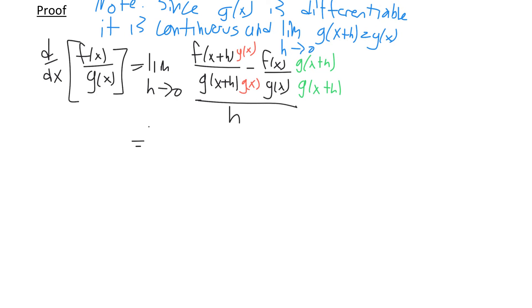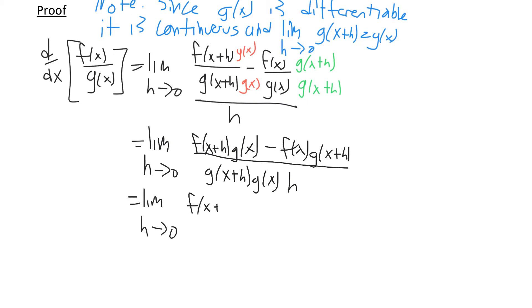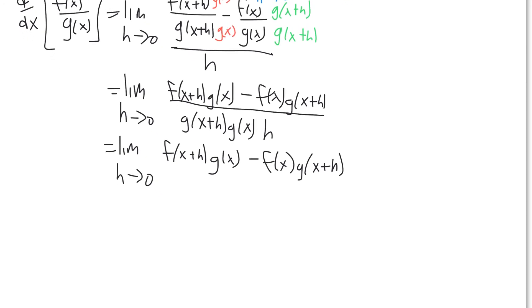That gives us the limit as h approaches 0 of f(x plus h) times g(x) minus f(x) times g(x plus h), all over g(x plus h) times g(x) times h. Unfortunately there's not much that factors in the numerator, so we use the same technique as in the product rule proof: we add and subtract the quantity f(x) times g(x).